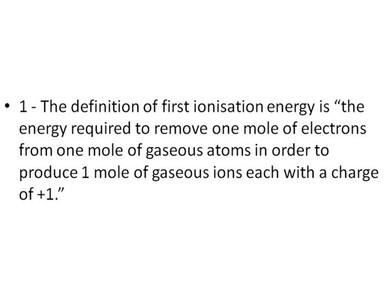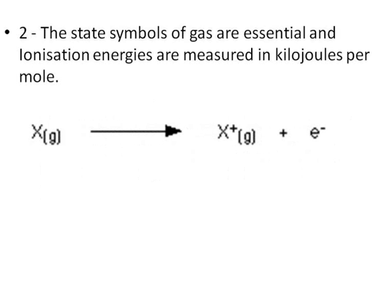So a quick recap. First, the definition of first ionization energy is the energy required to remove one mole of electrons from one mole of gaseous atoms in order to produce one mole of gaseous ions, each with a charge of plus one. Two, the state symbols of gas are essential and ionization energies are measured in kilojoules per mole.